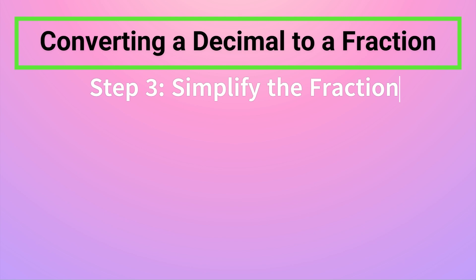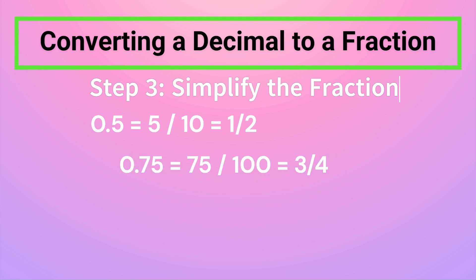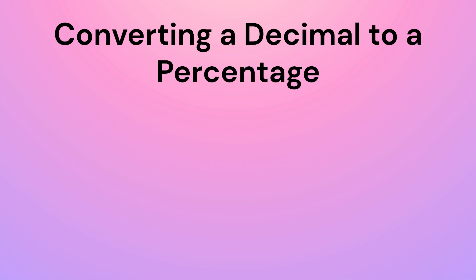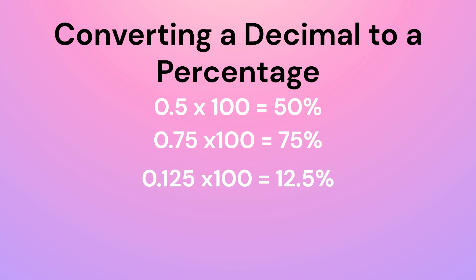Step 3: Simplify the fraction. Simplify by dividing both the numerator and the denominator by their greatest common factor. 5/10 simplifies to 1/2. 75/100 simplifies to 3/4. To convert a decimal to a percentage, simply multiply the decimal by 100. For example, 0.5 becomes 50%, 0.75 becomes 75%, and 0.125 becomes 12.5%.